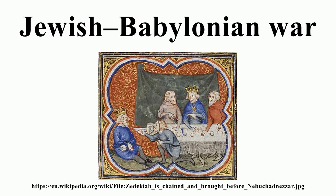Then he appointed Jehoiakim's uncle, Matanya, as King of Judah. Later, Matanya changed his name to Zedekiah.